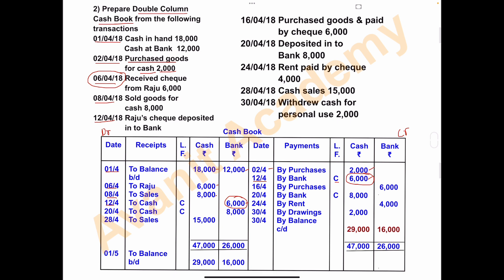On 16th April, goods were purchased and paid by check. Purchases are considered an expense. On the payment side, write 16th April, 'by purchases'. Since payment is made by check, record the amount of 6,000 in the bank column.